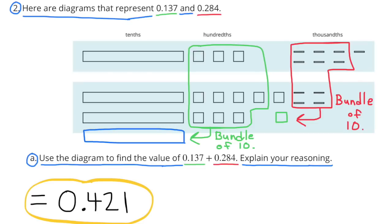Number 2. Here are diagrams that represent 137 thousandths and 284 thousandths. A. Use the diagram to find the value of 137 thousandths added to 284 thousandths. Explain your reasoning.